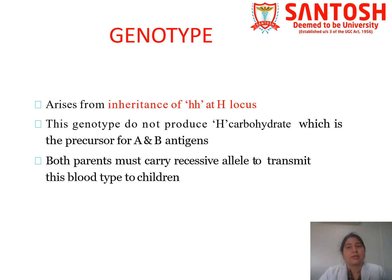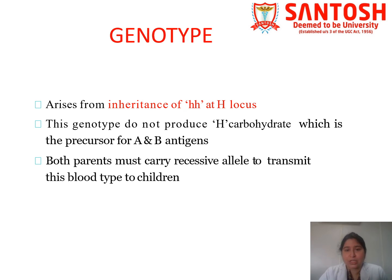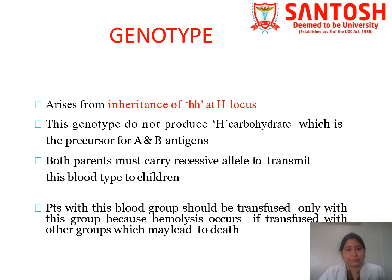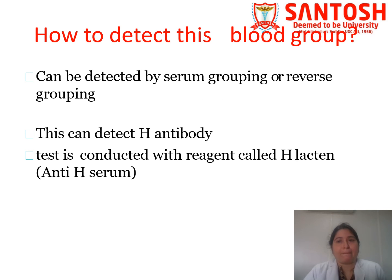Genotypically, capital H antigen is absent. There is inheritance of small h alleles, which are amorphous, at the H locus. This genotype does not produce H carbohydrate, which is the precursor for A and B antigens. Both parents must carry the recessive allele to transmit this blood group to their children. Patients with this blood group should be transfused with Bombay blood group only, otherwise there will be hemolysis and it may lead to death.